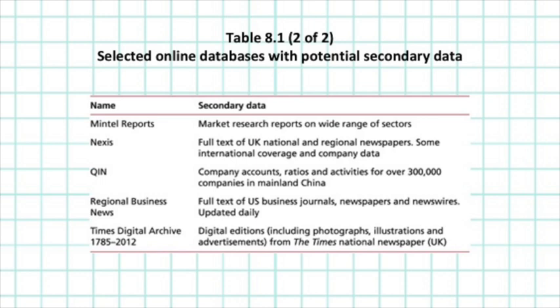Number one, survey — including census, continuous, regular or ad hoc survey. Number two, document — anything that includes text, audio or visual media. And finally, multiple source — compiled from multiple sources to create a snapshot, time series or continually updated data set. All of these are summarised in an example in figure 8.1.